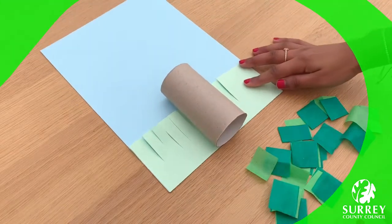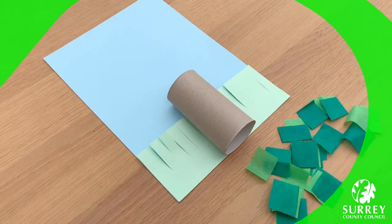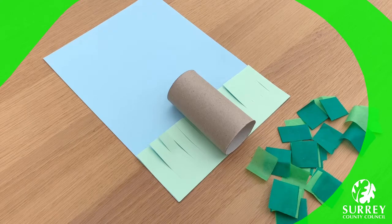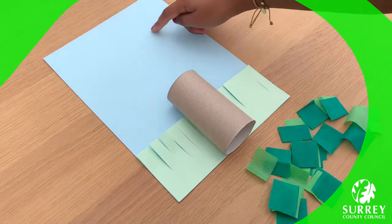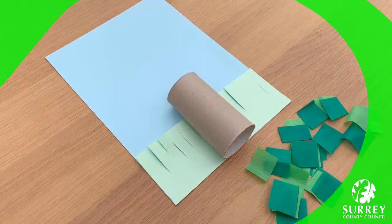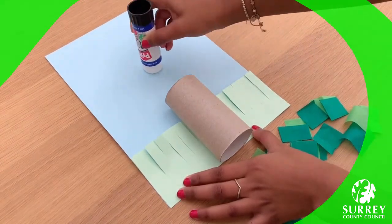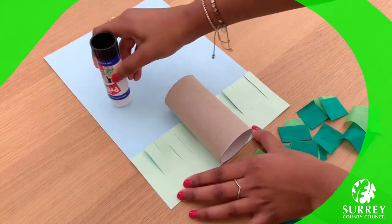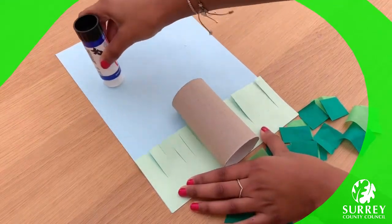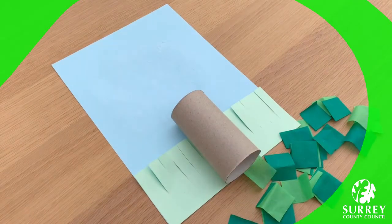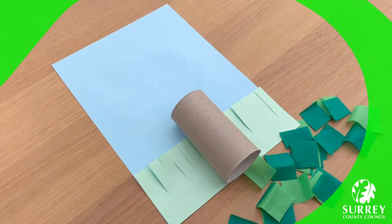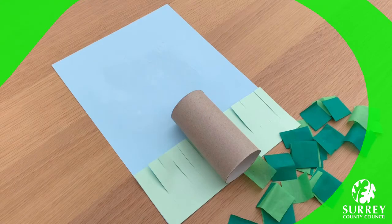Okay, great! Now get your glue stick or PVA glue, whatever one you have, and spread the glue at the top of the blue card. So this will be where the leaves go! Make sure you put lots of glue on so that the leaves stick! Wow! Well done everyone!